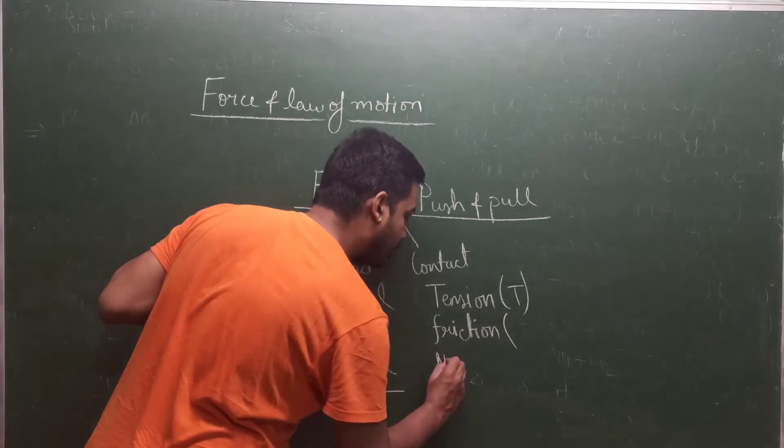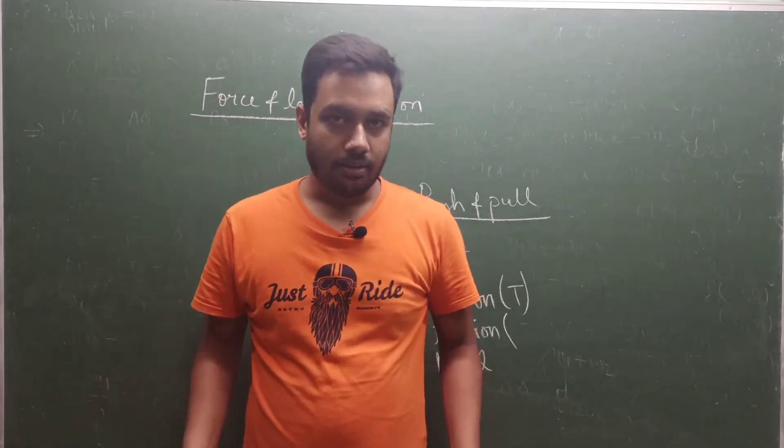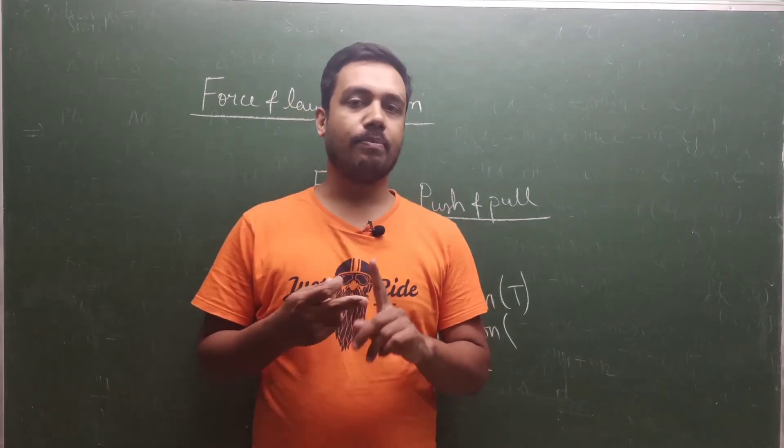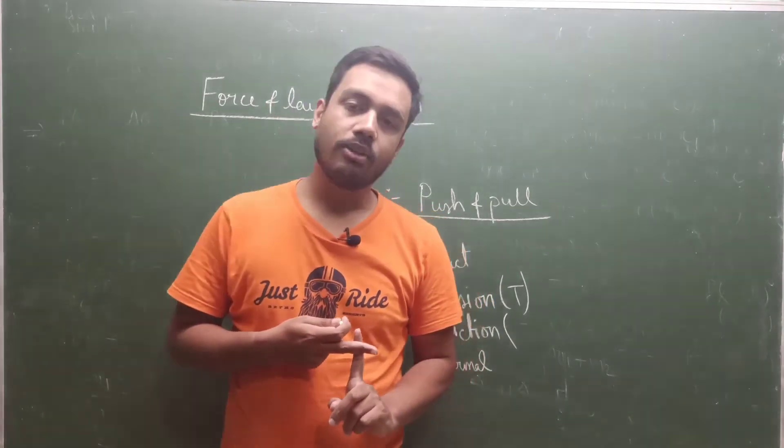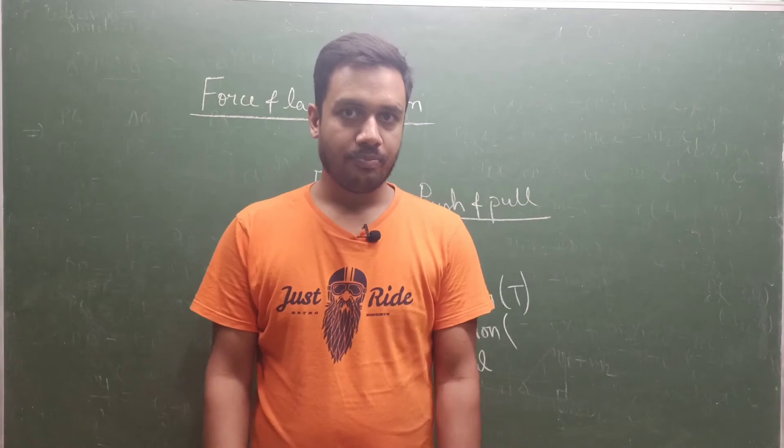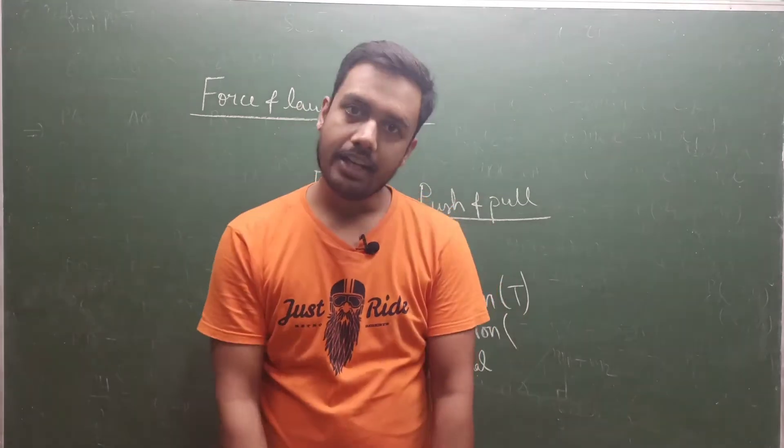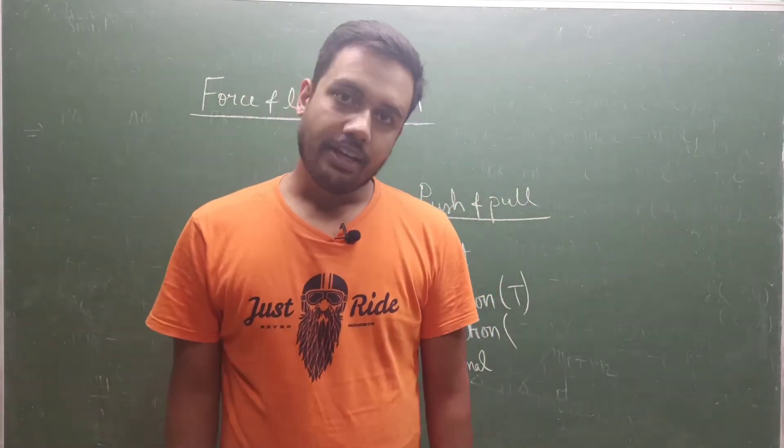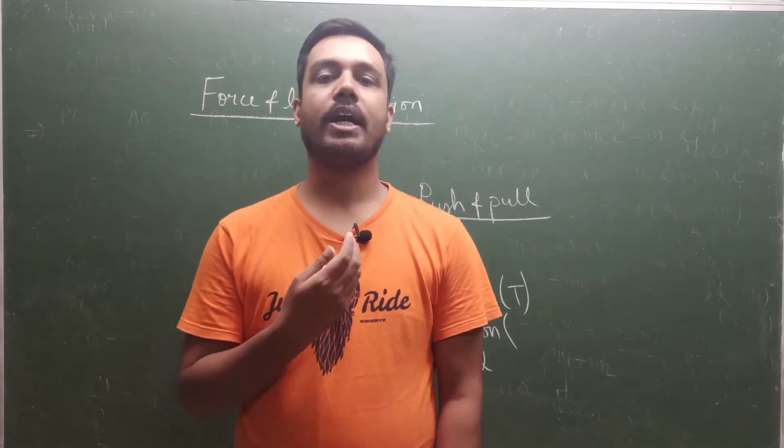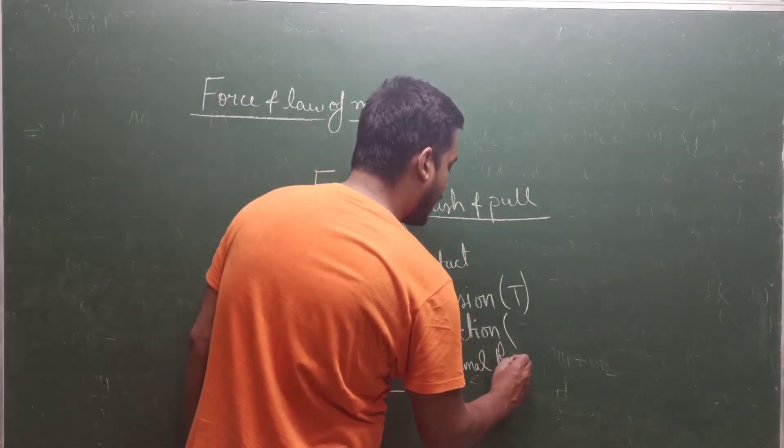Then you have a force which is normal reaction. If I am standing on the earth, I am applying my weight on the earth. Now from the third law, every action has an equal and opposite reaction. The amount of force I am applying downward is my weight. The force applied by the floor or the earth's surface on my body upward is called the normal reaction. So the normal reaction is also a kind of contact force.